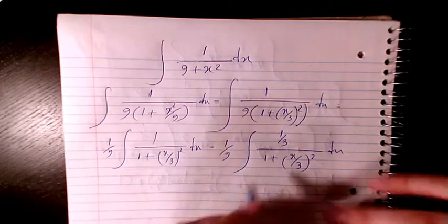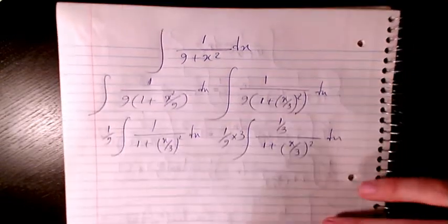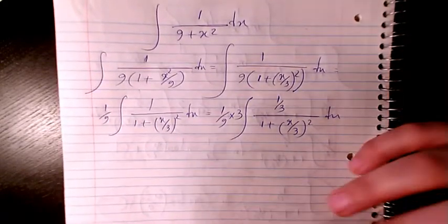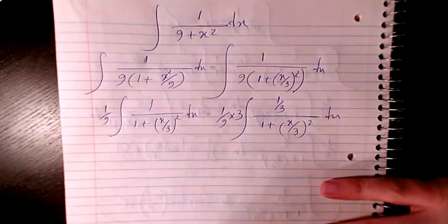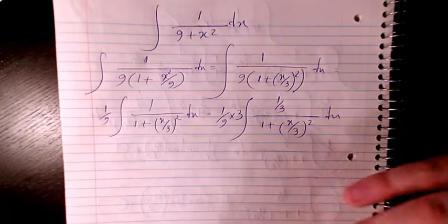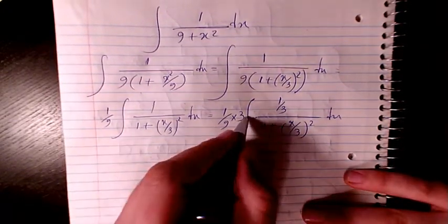When you divide 1 by 1 over 3, it means that you multiply it by 3 because the inverse of 1 over 3 is 3.